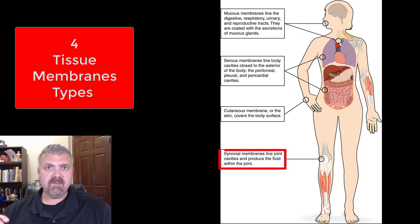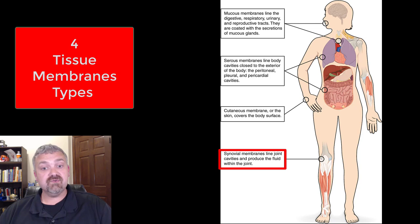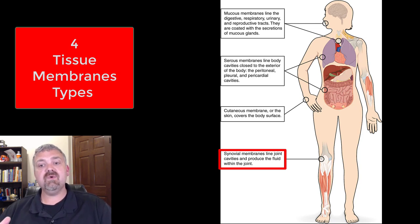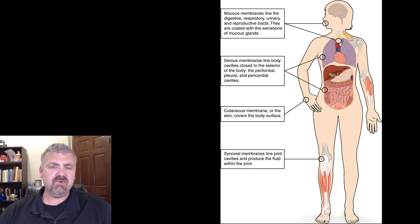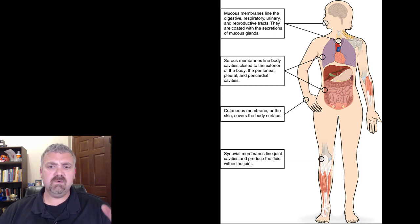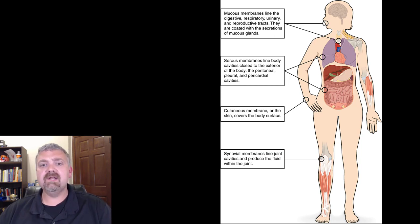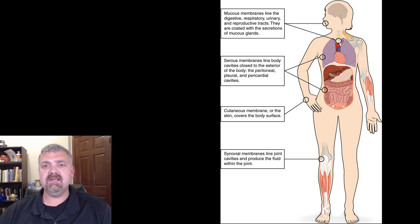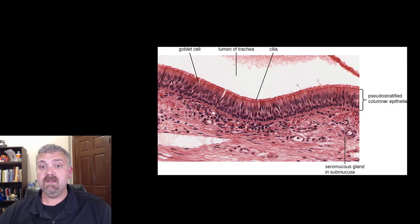Your synovial membranes are going to line your synovial joints. Most of your large complex joints will be synovial joints. Let me just quickly show you an example of each one, but we will dive into them more when they matter later. We are just talking about them from a basic histological standpoint at this point.